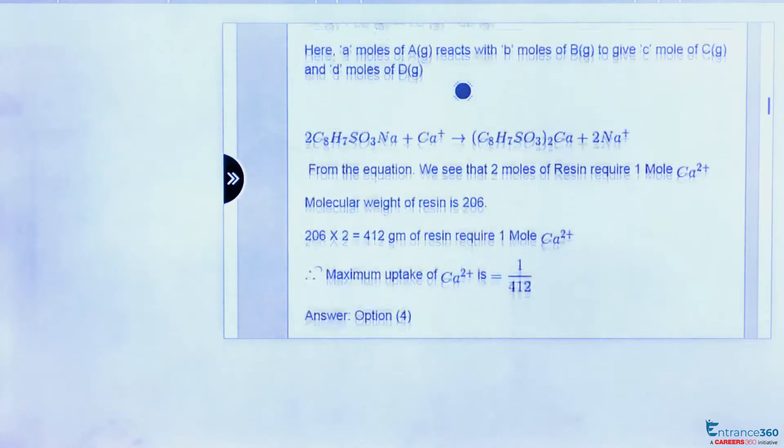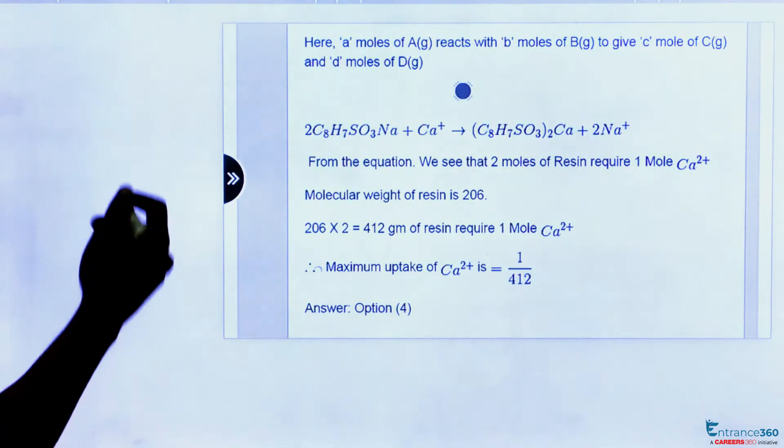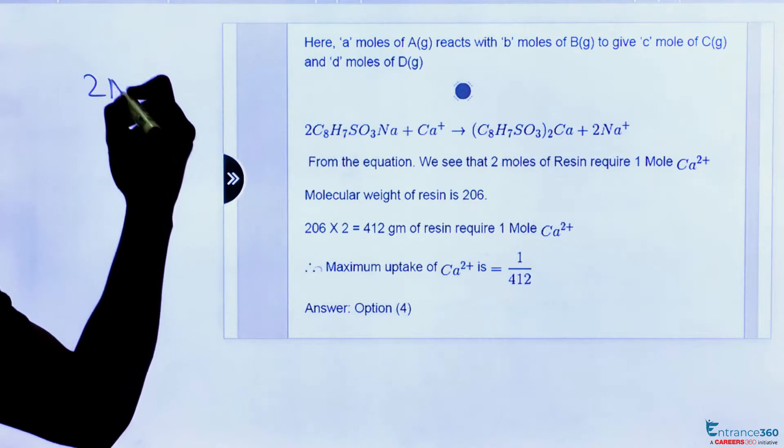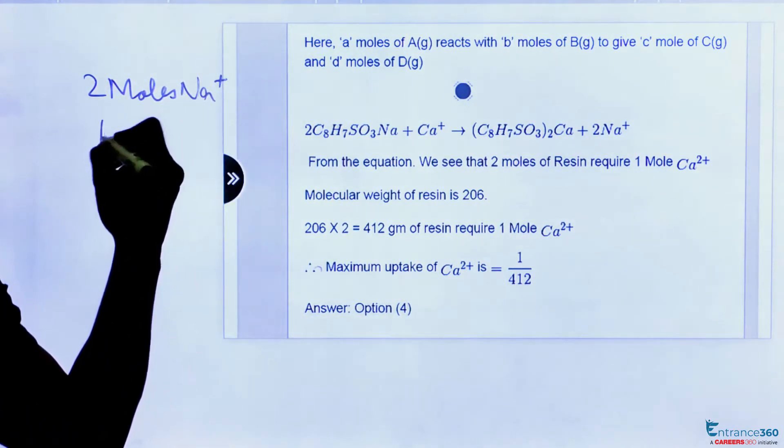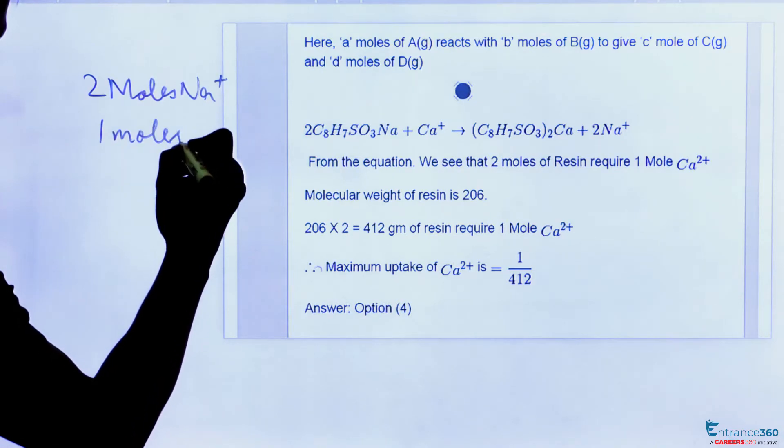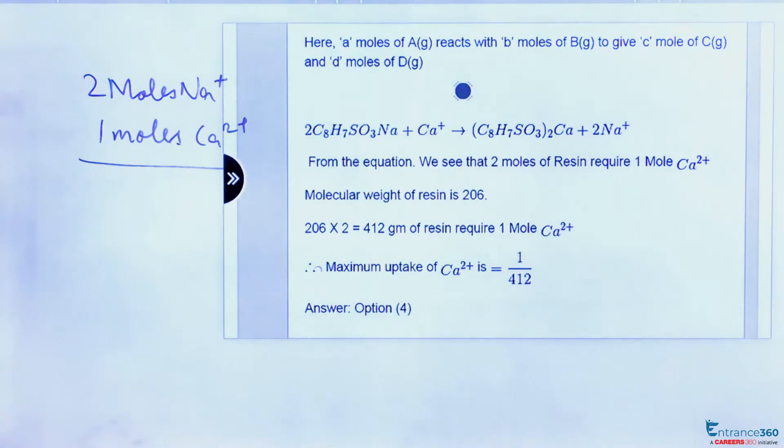Here we can see that we require two moles of Na+ for one mole of Ca2+ ion because Na has a single positive charge and calcium has a +2 charge. So the equivalent is: two moles of Na+ equals one mole of Ca2+.